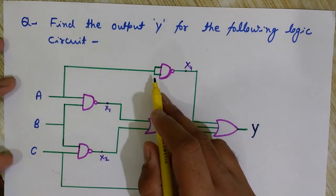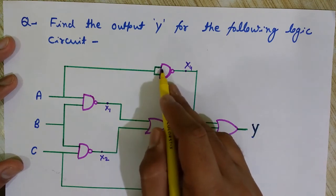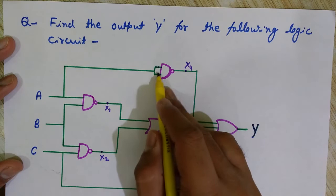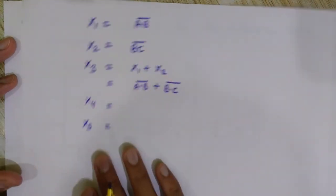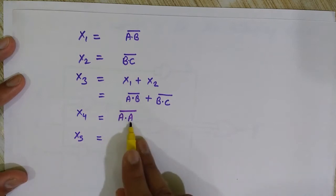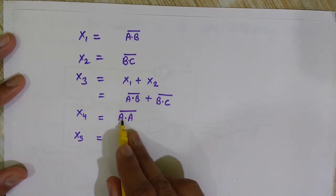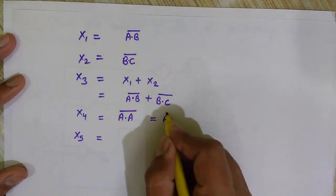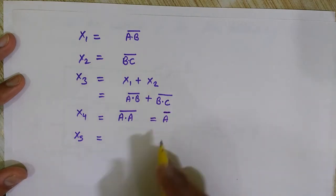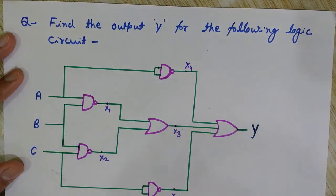Now what is x4? You see here x4 has input A going into both inputs of this NAND gate, so it is A NAND A. NAND means NOT of (A AND A), and we know A·A = A, so x4 = Ā. Similarly, x5 is C NAND C, so x5 = C̄.